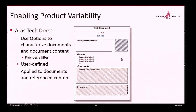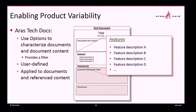Enabling product variability — as I mentioned earlier, documents often support many models of a product. A car manual or electronic device manual, for example, will say 'if you have model such-and-such, go to page X.' But most of the content spans all those models, so there's no need to create a separate copy for each. If the common content changes, you'd otherwise have to go back and update all of them.